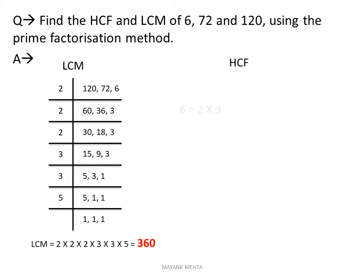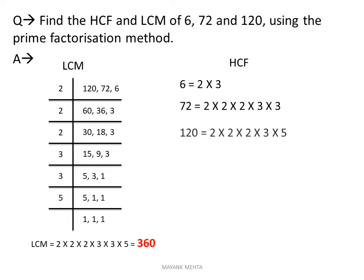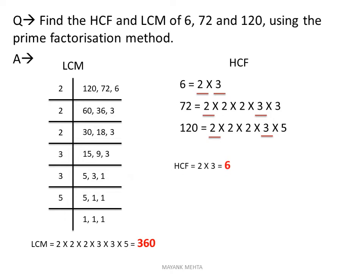अब HCF देखते हैं — हर एक का अलग-अलग पहले prime factor के form में लिखो: 6 = 2 × 3; 72 = 2 × 2 × 2 × 3 × 3; 120 = 2 × 2 × 2 × 3 × 5. अब इनमें common क्या-क्या है — एक 2 common है और एक 3 common है — तो HCF = 2 × 3 = 6.